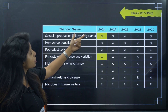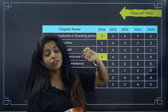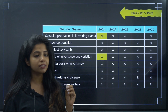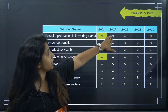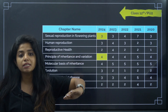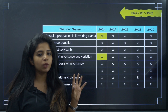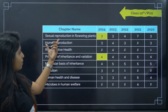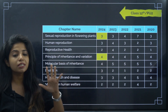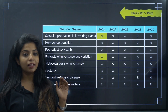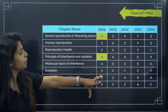'Sexual Reproduction in Flowering Plants' had 3 questions in 2020, went up to 7 in 2021, then 4, then 3. They're maintaining at least 3 questions minimum from this chapter. 'Human Reproduction' is consistently in the range of 2 to 4 questions, and there was never a year with zero questions from this chapter.